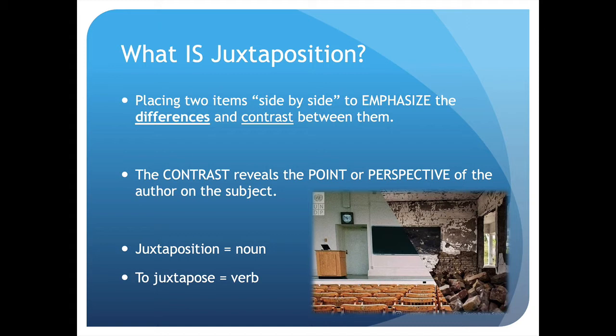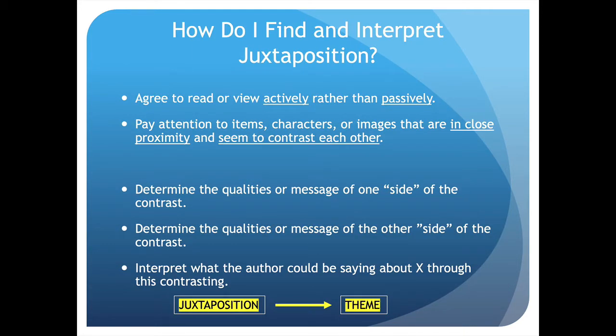We'll talk through how we can dissect that juxtaposition to help determine what the author's point was, and then we can ideally learn from the author's point. So how do I find and then interpret juxtaposition? As always, we have to agree that we're going to read or view actively rather than passively. We really have to make a commitment to become students of the text we are looking at, reading, or viewing.